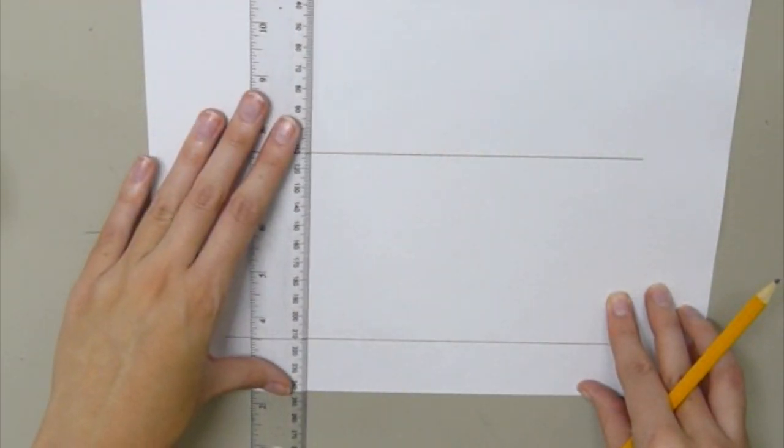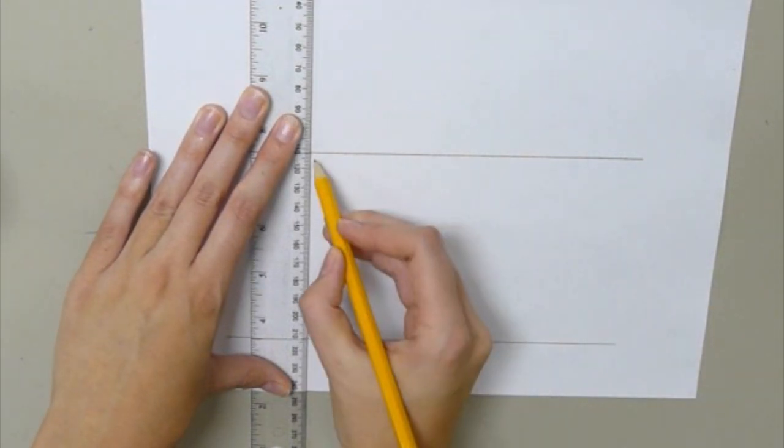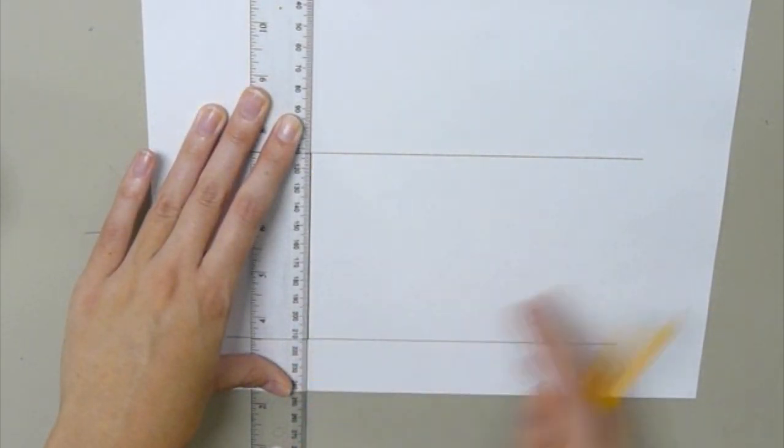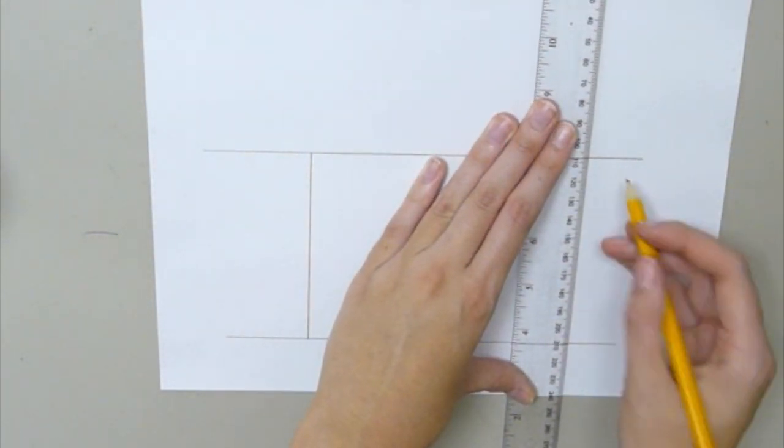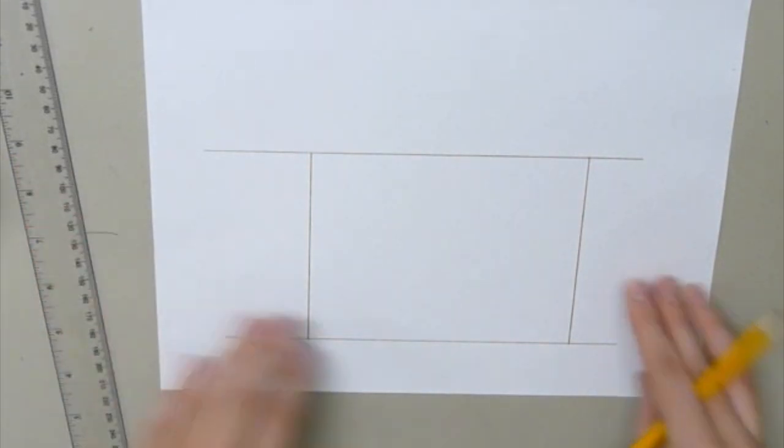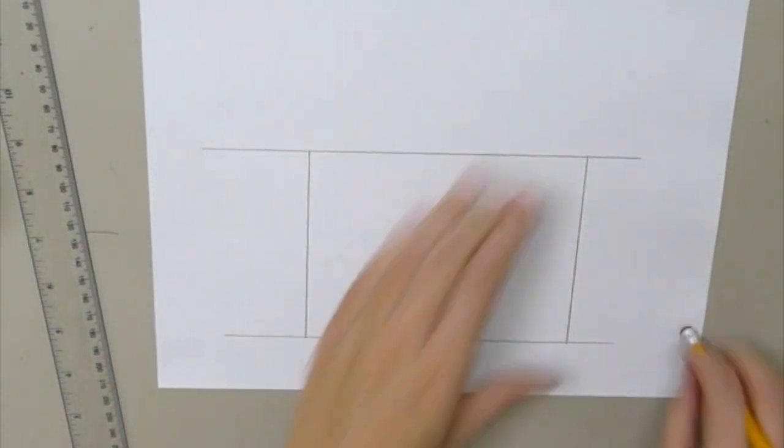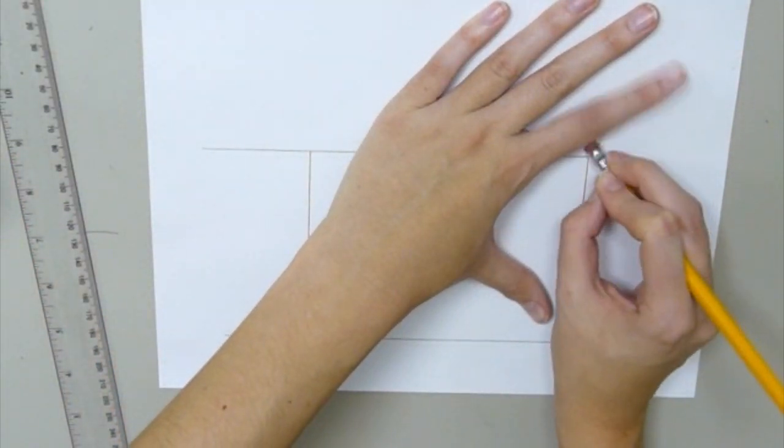Then I'm going to put my ruler on the left, draw a line, put my ruler on the right, and draw a line. I'm going to erase these ends because we don't need those.